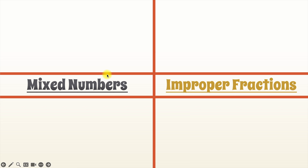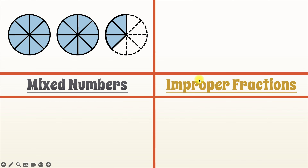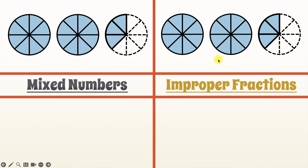Let's start with this model that relates mixed numbers to improper fractions. You'll notice that the model for mixed numbers and improper fractions is exactly the same, because mixed numbers and improper fractions do exactly the same thing — they represent values that are more than one whole. Mixed numbers do it using a whole number and a fraction together.